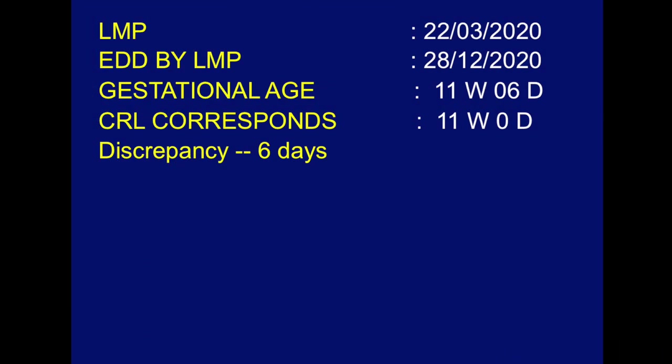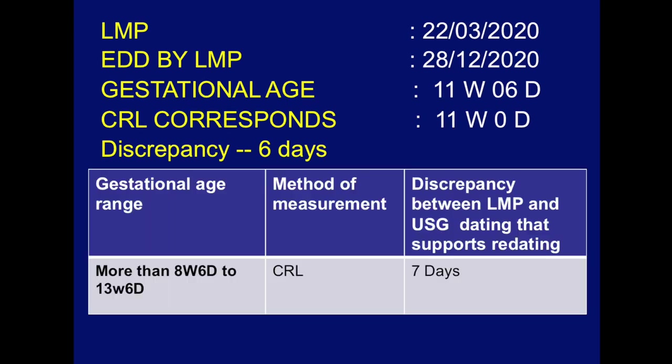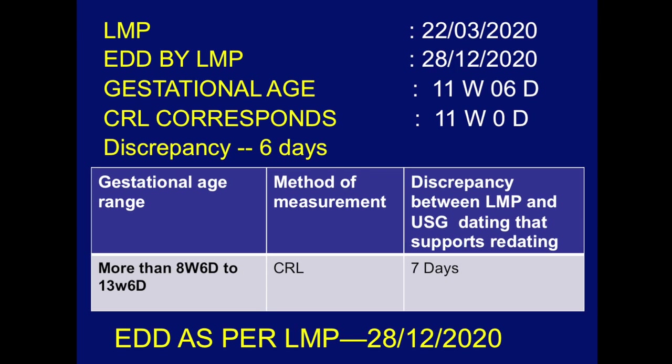When seeing the patient for the first time at around 12 weeks with a discrepancy of 6 days, the pregnancy is at 11 weeks 6 days — falling between 9 to 14 weeks. Dating is by CRL only, and the acceptable difference is 7 days. Here the difference is 6 days, which is within range, so the EDD is written as per LMP and is not changed.